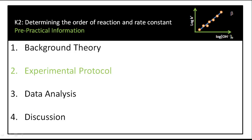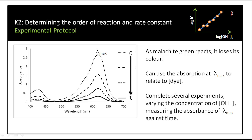In the lab, malachite green has a strong absorption spectrum with a peak at about 615 nanometers. As the dye reacts it loses its color, so absorbance decreases over time. Measuring absorbance at the lambda-max as a function of time shows how quickly the dye is consumed. We will complete the experiment at several different concentrations of hydroxide ion so we can determine beta and work out all parameters of the reaction.